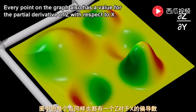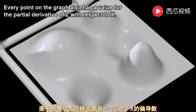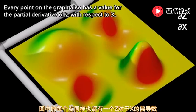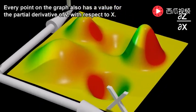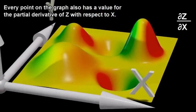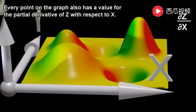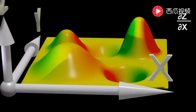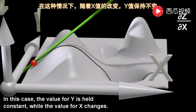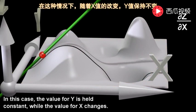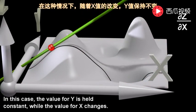Every point on the graph also has a value for the partial derivative of z with respect to x. In this case, the value for y is held constant while the value for x changes.